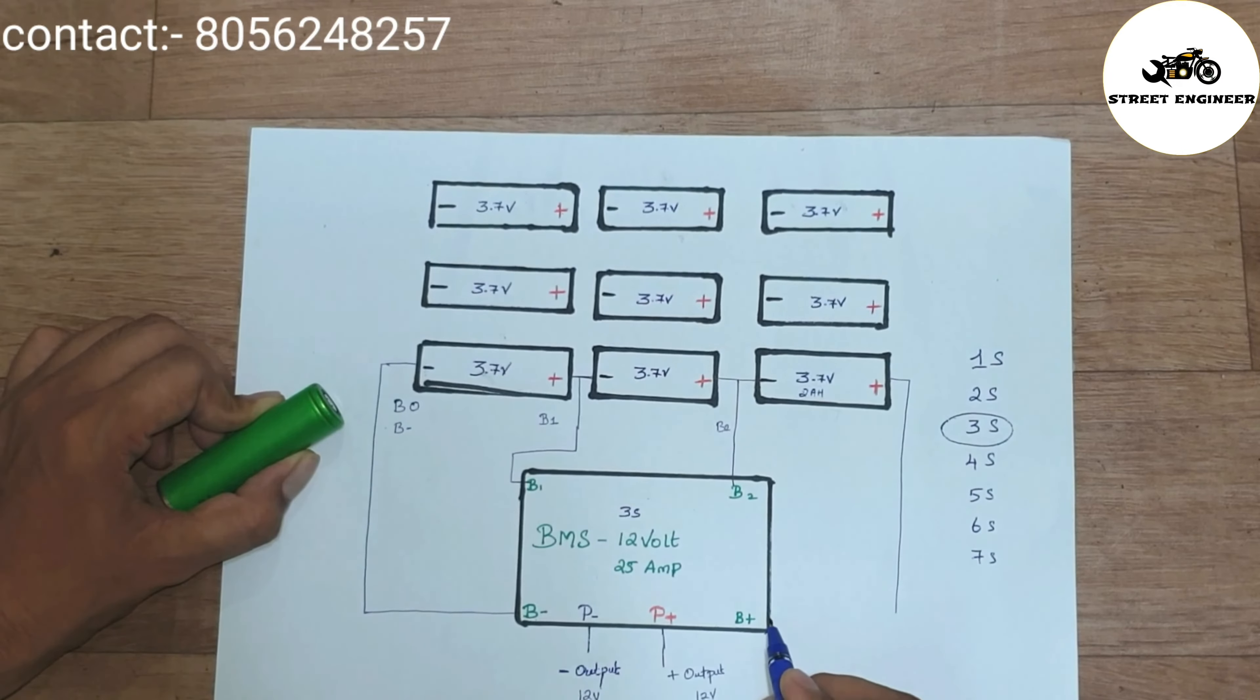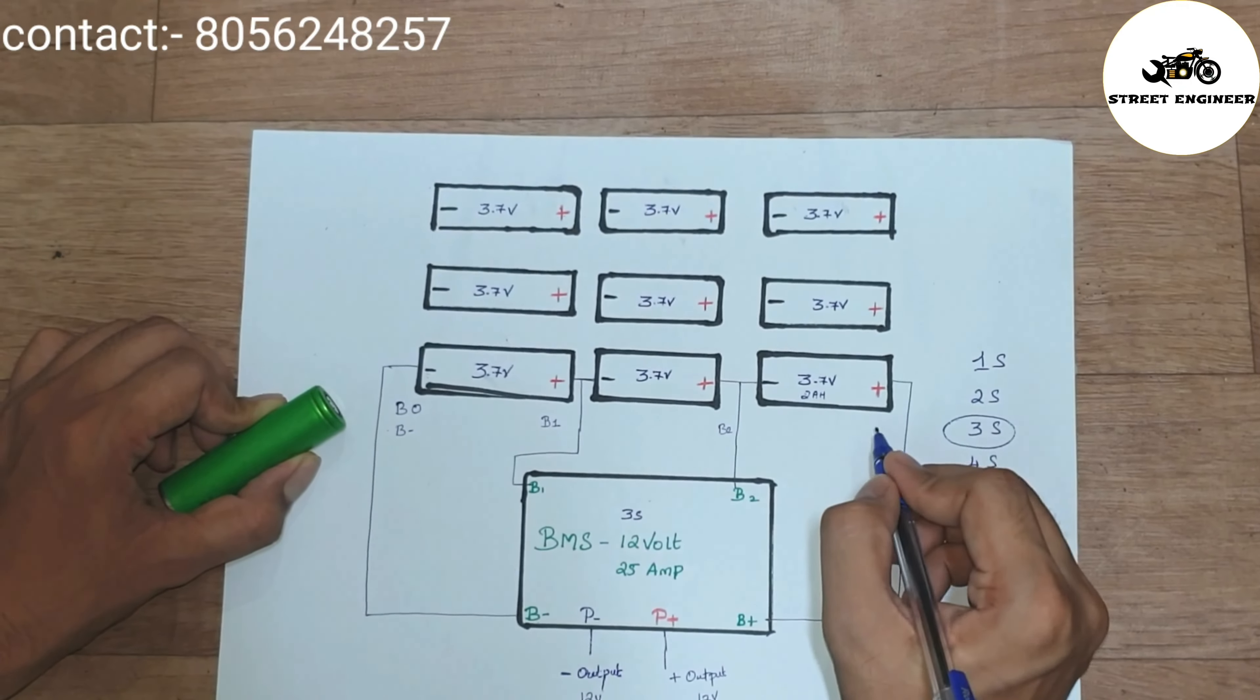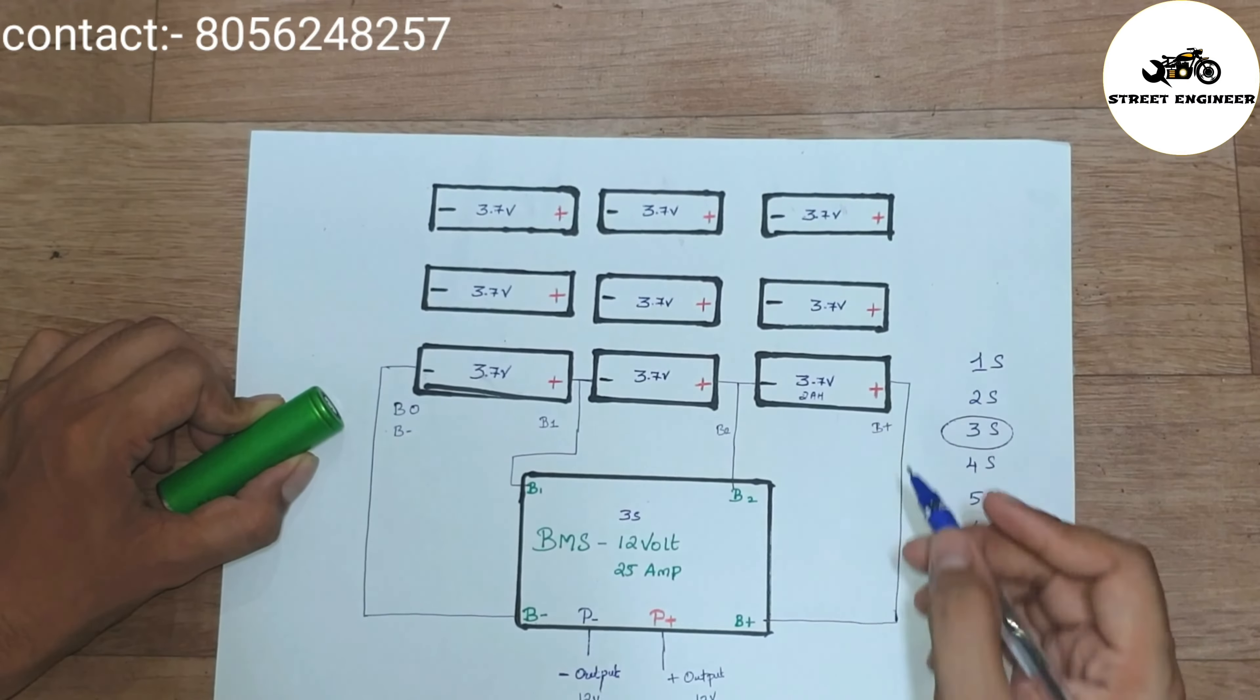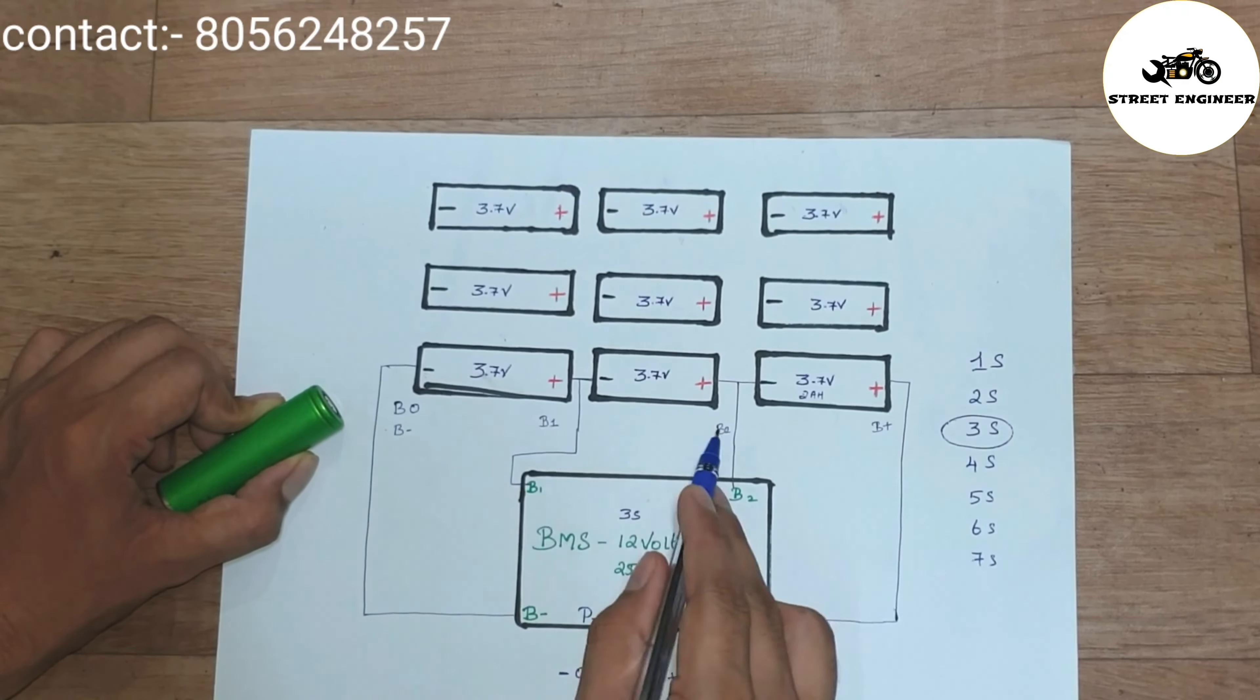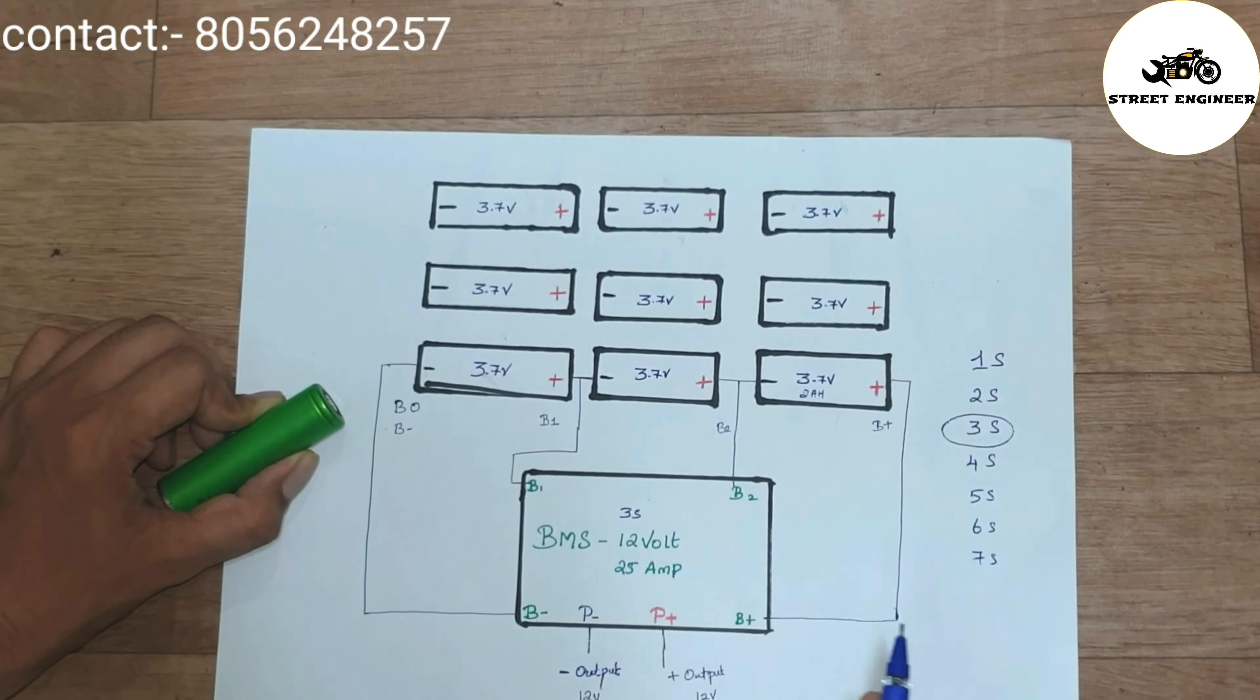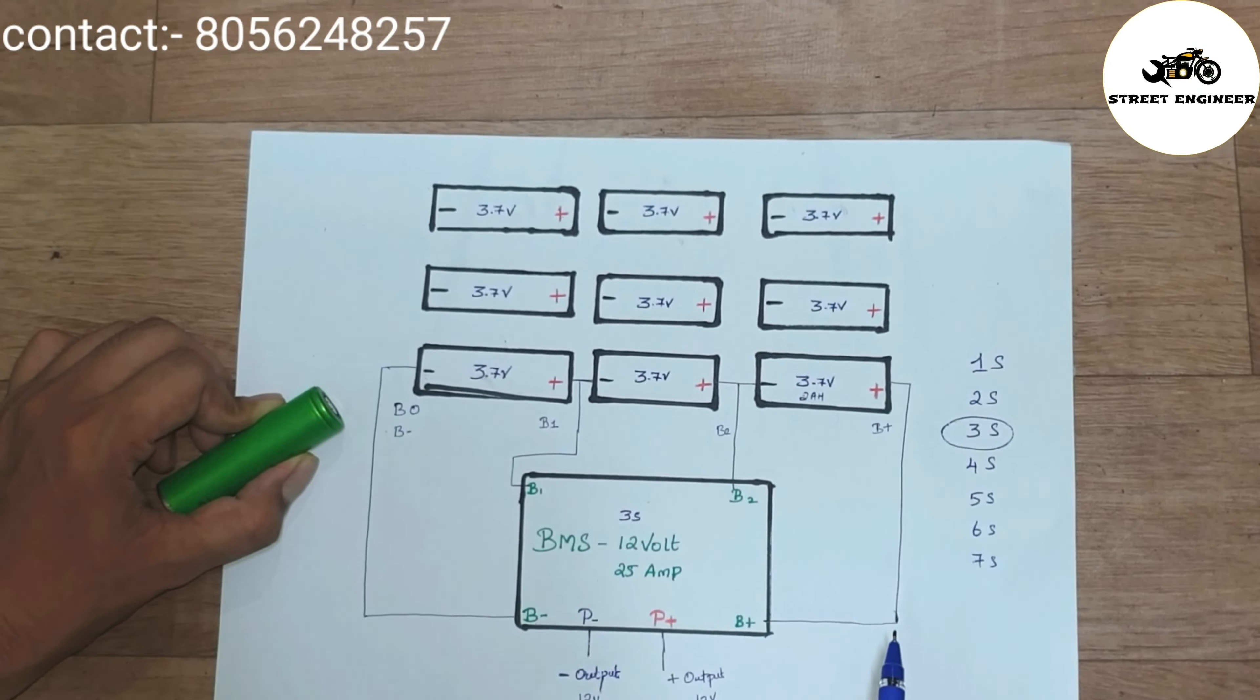Now, connect third cell, I mean final output positive terminal of cell with BMS B+. So guys, I have connected 3 cells in series and connected with BMS. So, our output will be 12V and 2AH.